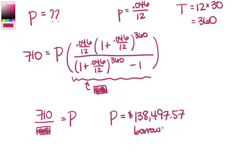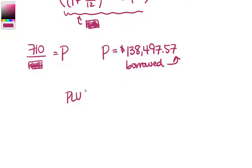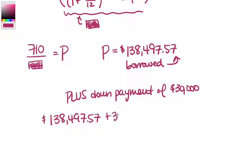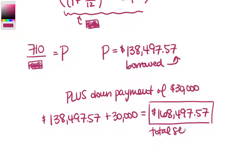So what we end up getting is, remember, we didn't just borrow the whole price of the house. We borrowed plus we had a down payment of $30,000. So we take that $138,497.57 that we borrowed. We add to it the $30,000 that we just paid out of pocket. And what we get is the total price of the house, which is $168,497.57. So this is the total selling price.